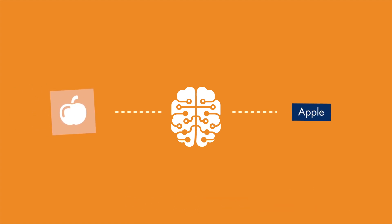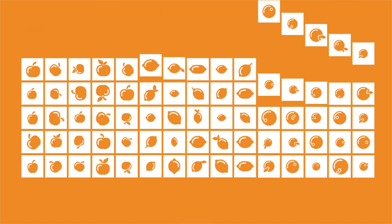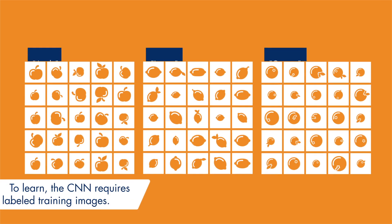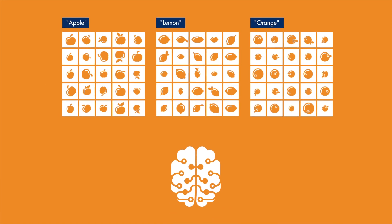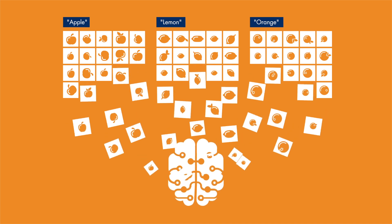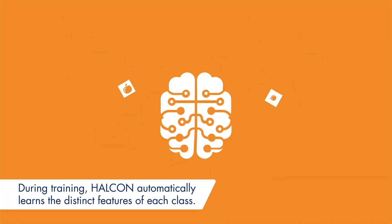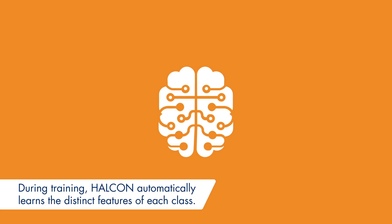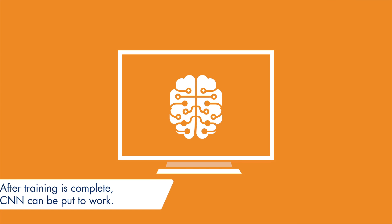To train a CNN, users must provide Halcon with labeled training images. Labeled here means that these images must already be pre-assigned to their respective categories. Halcon analyzes these images and automatically learns which features can be used to identify the given classes — tedious hand-crafting of features is no longer necessary.